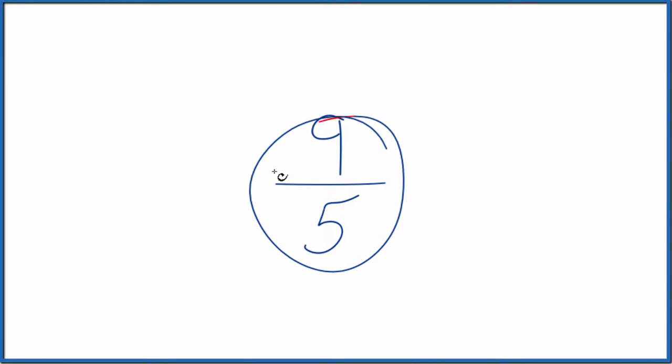Let's write the fraction 9 fifths as a mixed number in simplest terms. So the way we do this is we take 9 and divide it by 5.